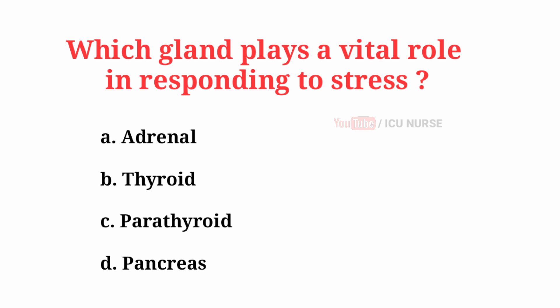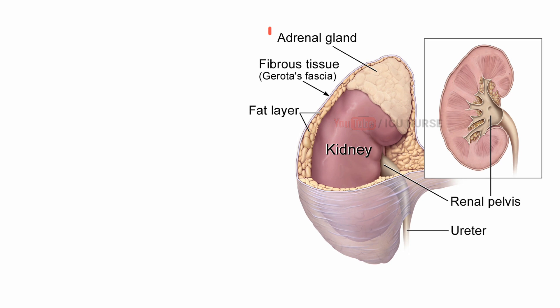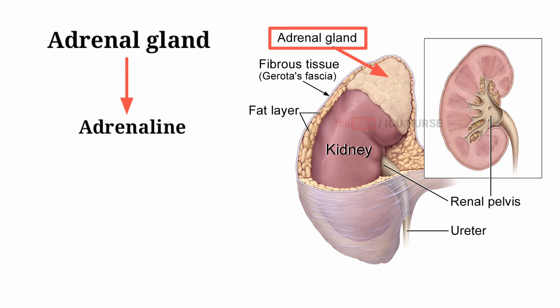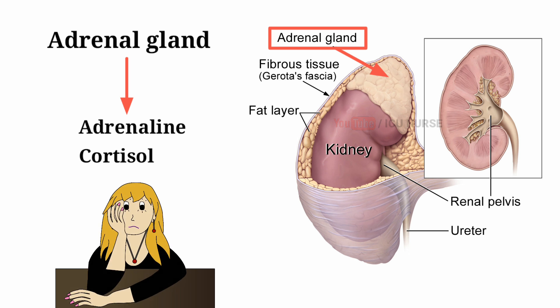Which gland plays a vital role in responding to stress? The correct answer is A: Adrenal gland. The adrenal gland produces adrenaline and cortisol, hormones that determine how your body responds to stress.